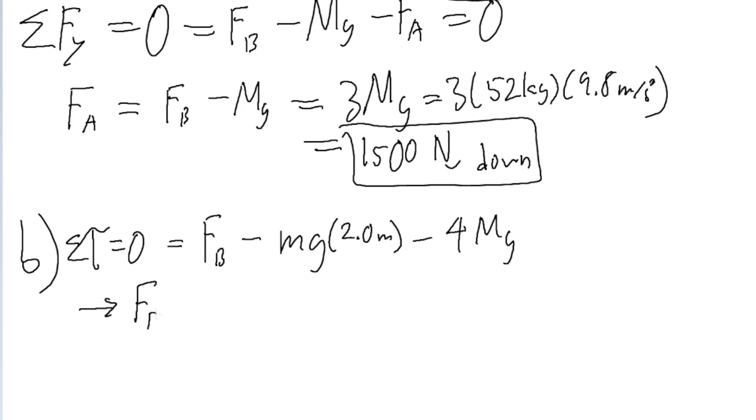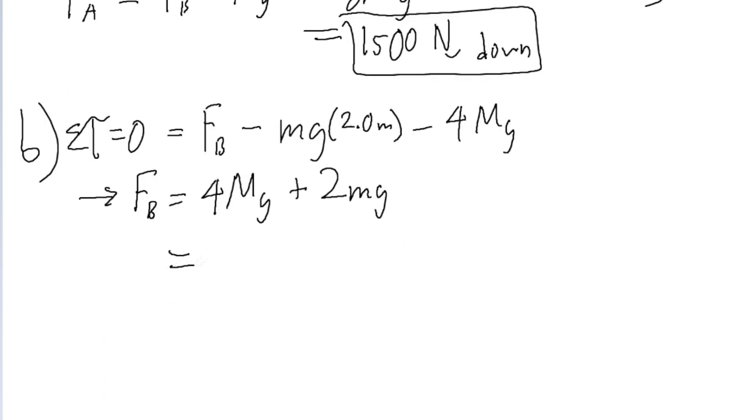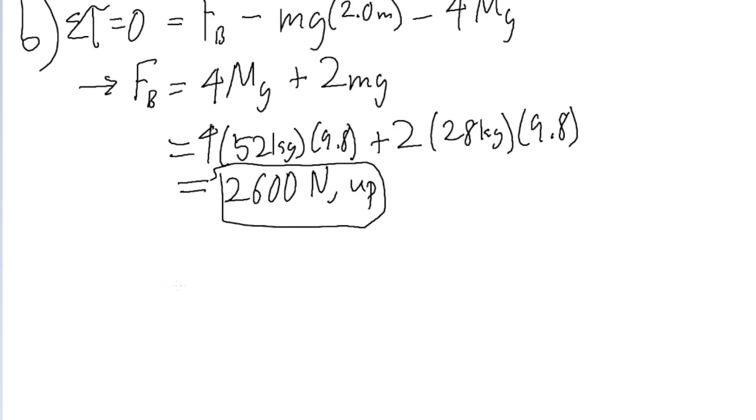So f sub b is equal to 4 big mg plus 2 small mg. So yeah, this is 4 times 52 kilograms times the 9.8 meters per second squared plus 2 times the mass of the diving board, which is given to us as 28 kilograms times again, 9.8. And if you put this into a calculator, then this gives us a force of 2600 newtons directed up. So that's f sub b for part b.